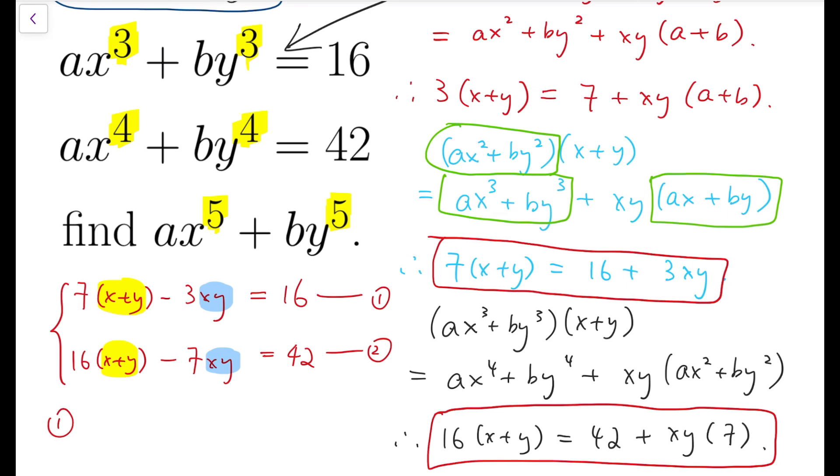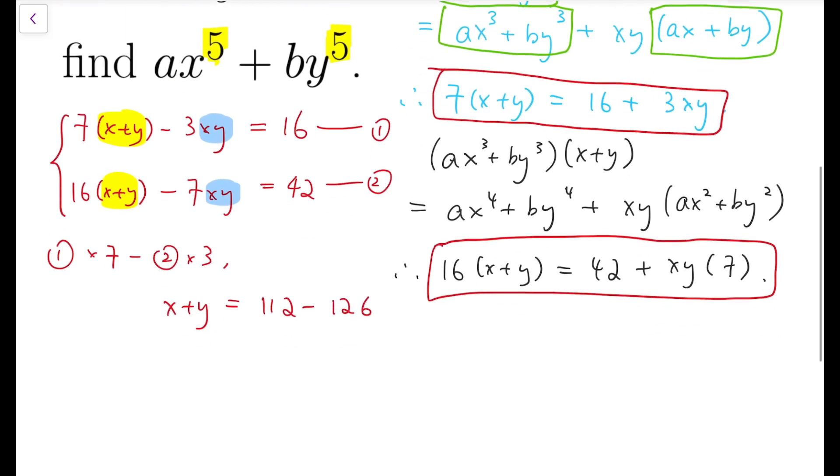So first equation times 7 minus second equation times 3 I will get exactly 1(x + y) to be equal to 112 minus 126 and that is negative 10—and that's not minus 10, that's actually minus 14, arithmetic error—and so xy is then minus 38.